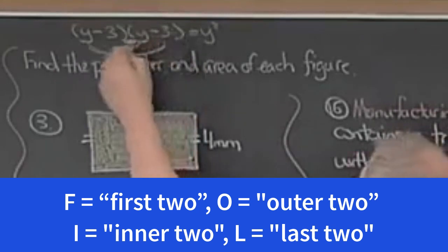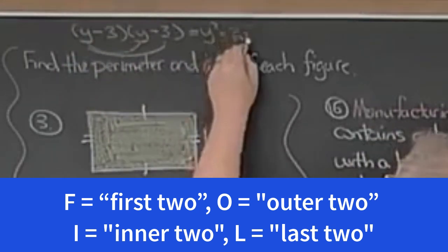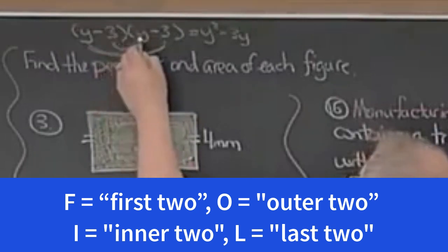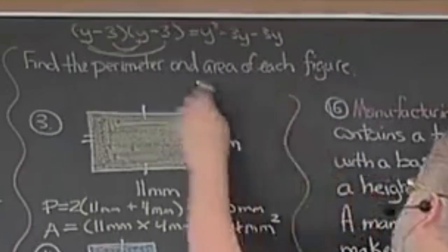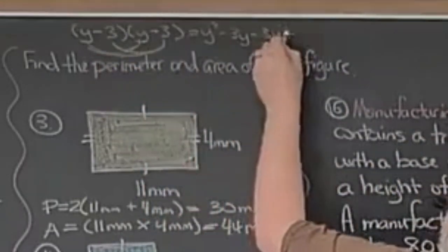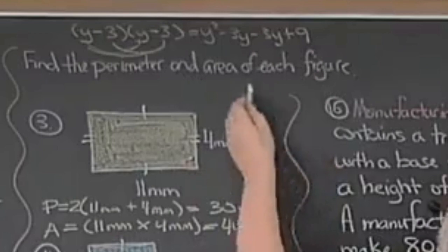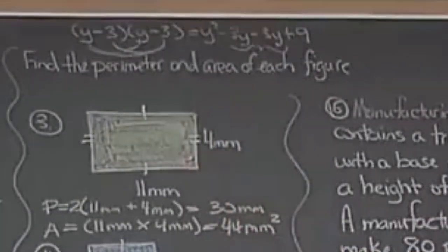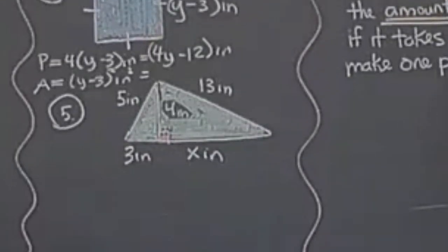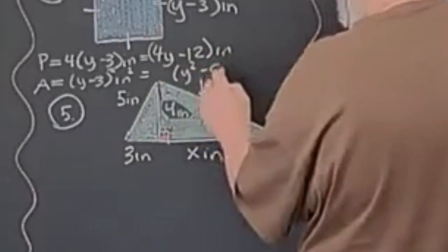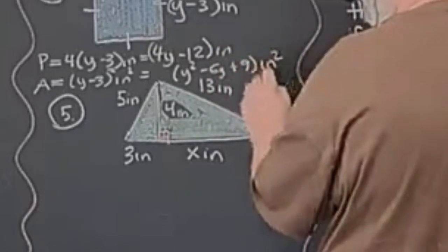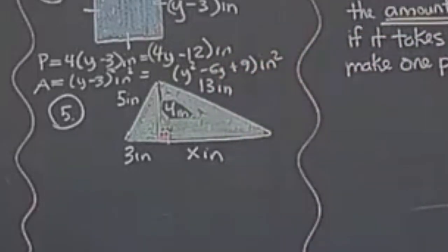Y times negative 3 would be the O part of FOIL, so that would be negative 3y. Negative 3 times y would be the I part of FOIL, so that would be negative 3y. And negative 3 times negative 3 would be the L part of FOIL. And then I combine those two terms together because they're like terms. Negative 3y minus 3y is negative 6y. So the final answer here is y squared minus 6y plus 9 inches squared. And so that's the area of the figure.